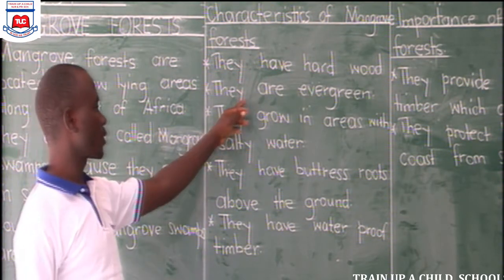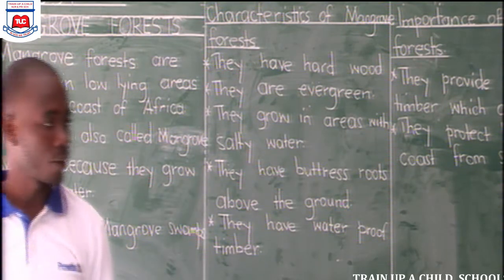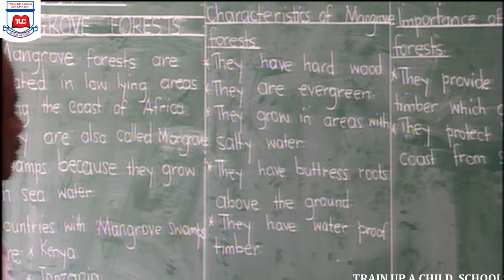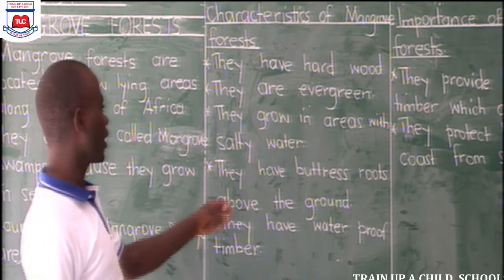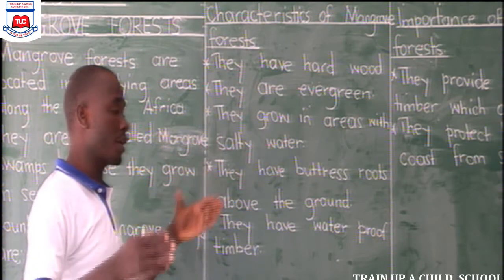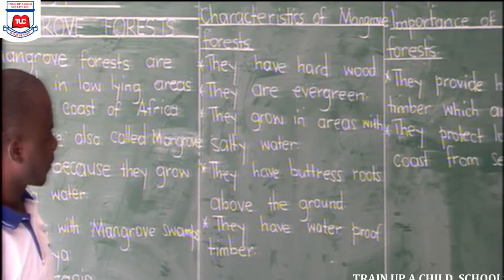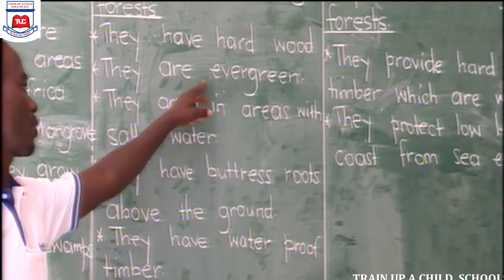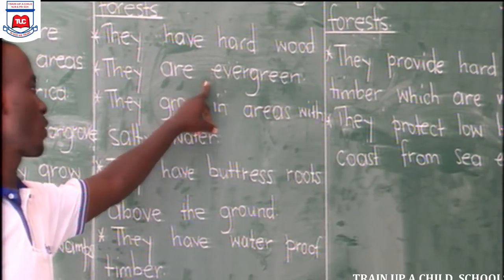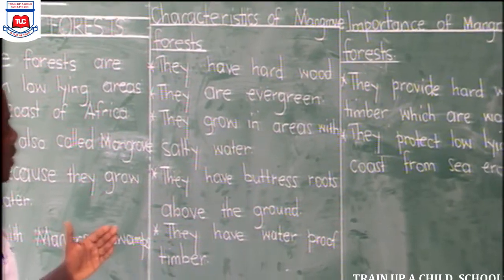Mangrove swamps are evergreen. The coastal parts of Africa — West Africa and East Africa — receive heavy rainfall throughout the year. That's why they are evergreen.